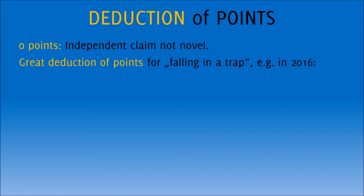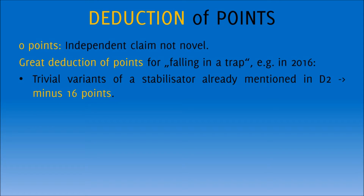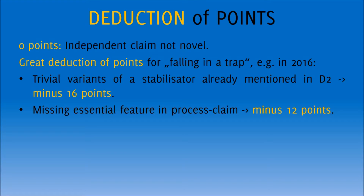Great deduction of points also happens for falling into a trap — at least that's how I call it. In the 2016 Paper A, this was the case, for example, if you tried to claim trivial variance of a stabilisator, because this was already mentioned in one of the prior art documents and you would have lost 16 points for that. And in the same year, when you missed an essential feature in the process claim which was necessary for this process to work in the first place, you could lose up to 12 points. However, I call it falling into traps for a reason because the paper pointed out at several places that these aspects were actually important — maybe in a cryptic way, as it always is in the examination papers, but it was there.